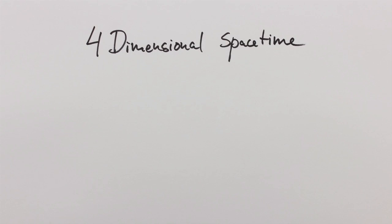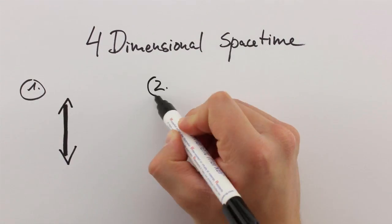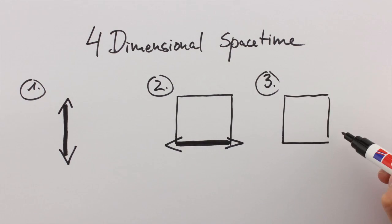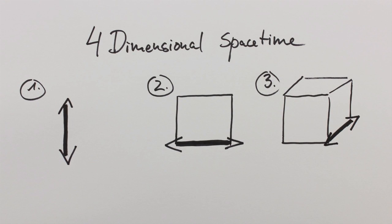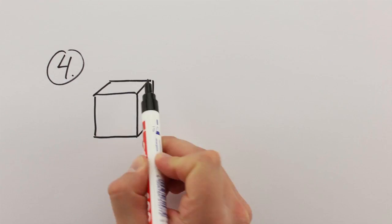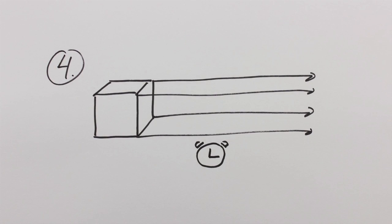It tells us that we all live in a four-dimensional space-time. We can move up and down, left and right, backwards and forwards. That's three physical dimensions. But we also move in time, in the direction of the future. That's dimension number four.